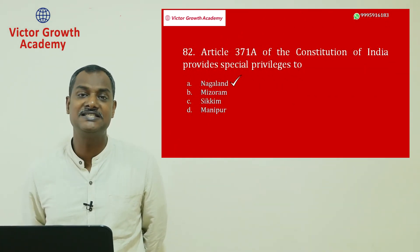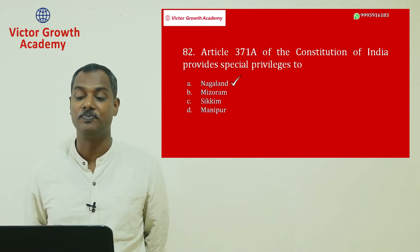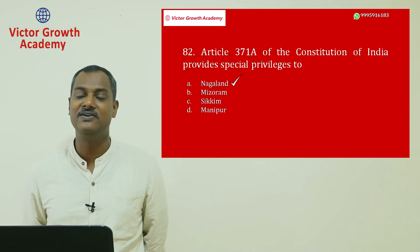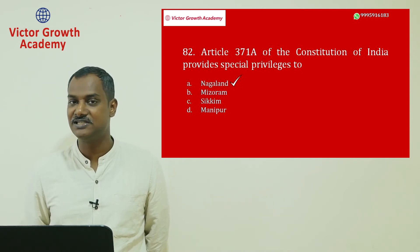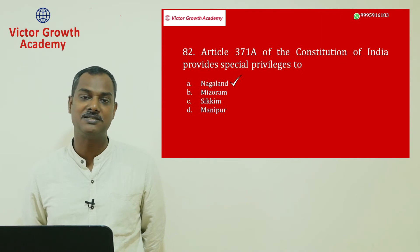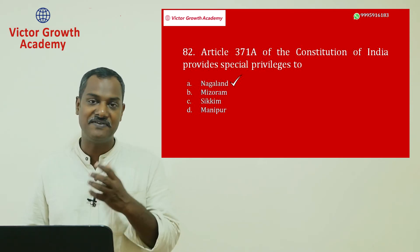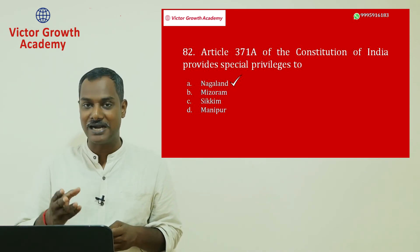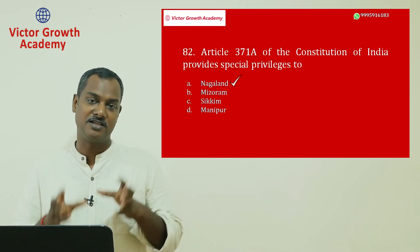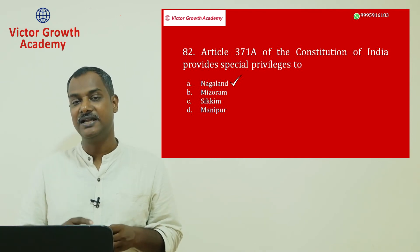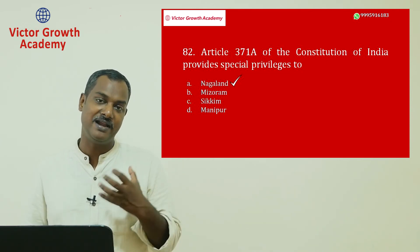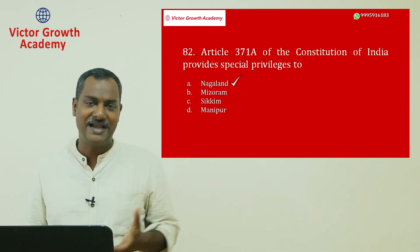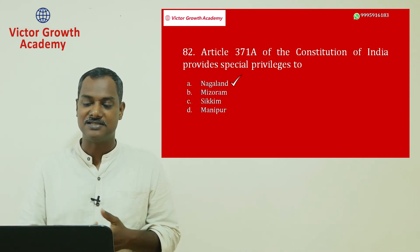Question number 82: Article 371A of the Constitution provides special privileges to which state? This exam was held on 8th September — possibly coincidental with Article 370 abrogation. When 370 was abrogated, other similar provisions like Article 371A were discussed. Article 371A gives special privileges to the people of Nagaland. The 371 series gives different privileges to different northeastern states. Question 82 answer is A: Nagaland.